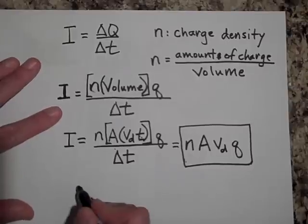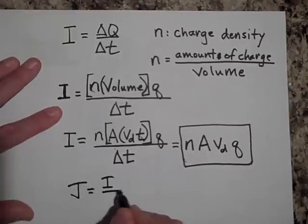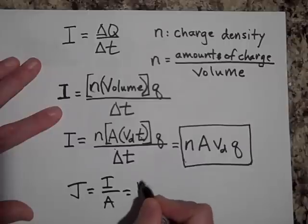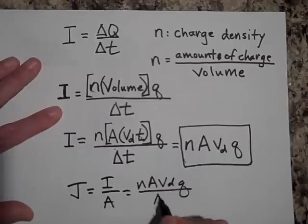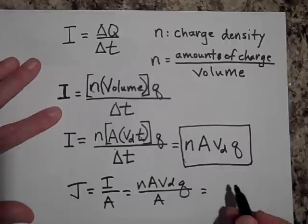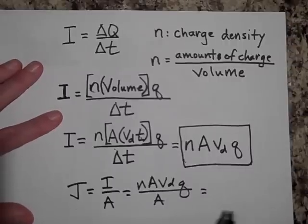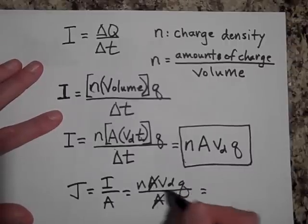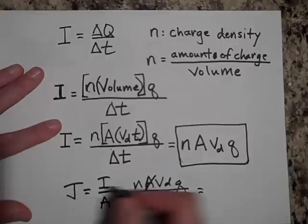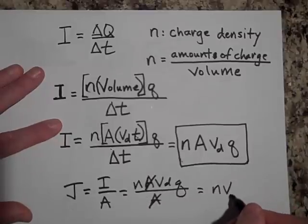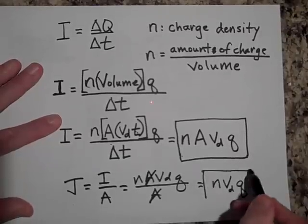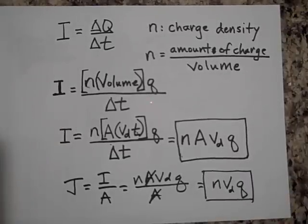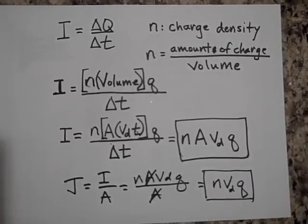Now look at what current density J = I/A becomes: J = nAvdq / A, so the cross-sectional area cancels, and current density is just J = n × vd × q. Lots of number juggling — see you in the next video!